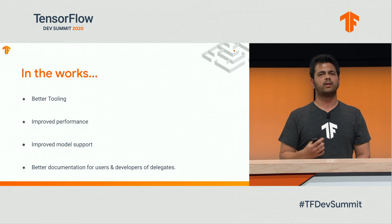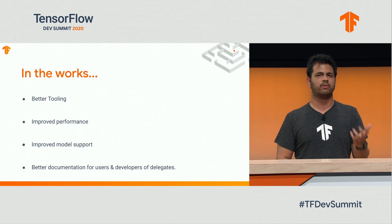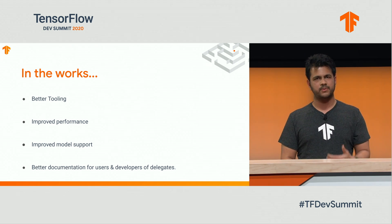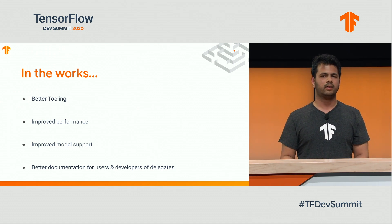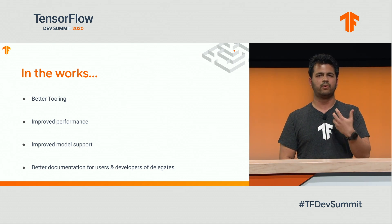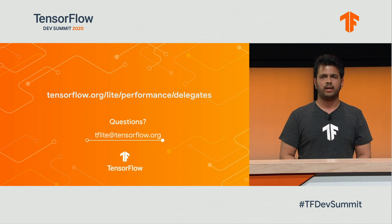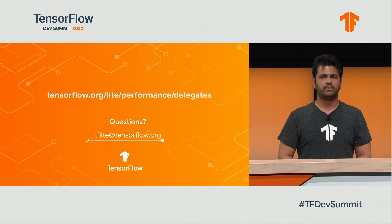In the coming months, we are working on better tooling for delegates for you to figure out how and why performance is different from what you would expect. We are also working on improved performance across all our delegates and improved model support with ops and different kinds of models, such as floating point and quantized models. And we are also working on revamping our documentation so that you have better support for using and writing your own delegates. You can look at our documentation on TFLite performance delegates for all things delegates, the different options, and how to write your own. If you have any questions, feel free to reach out to us at tflite.tensorflow.org. Thank you.